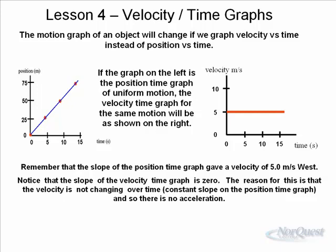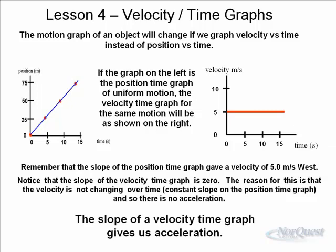The slope of the position time graph gave a velocity of 5 meters per second west, and that 5 meters per second is constant because the slope of the position time graph is constant. Notice that the slope of the velocity time graph is zero. This is an important revelation: the velocity is not changing over time. There is no acceleration. The slope of the velocity time graph actually gives you the acceleration — in this case zero, because the object is moving at a constant velocity of 5.0, it doesn't speed up or slow down.